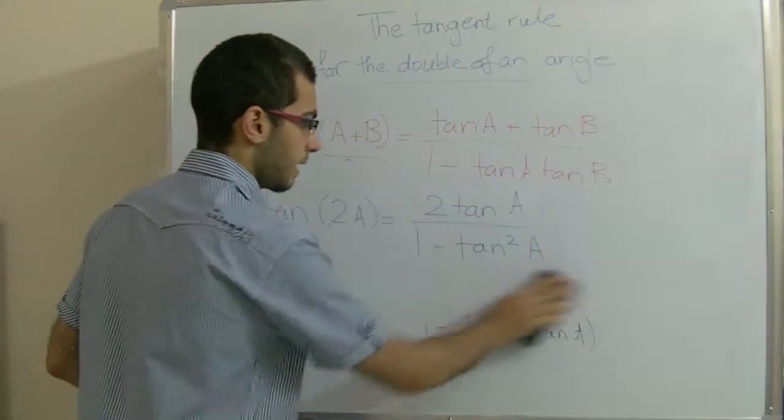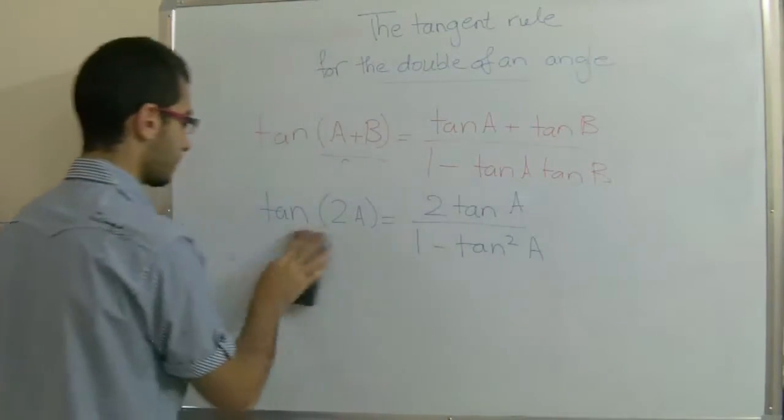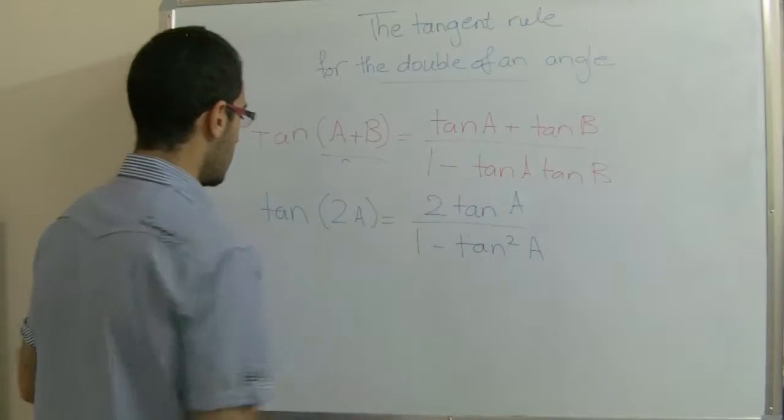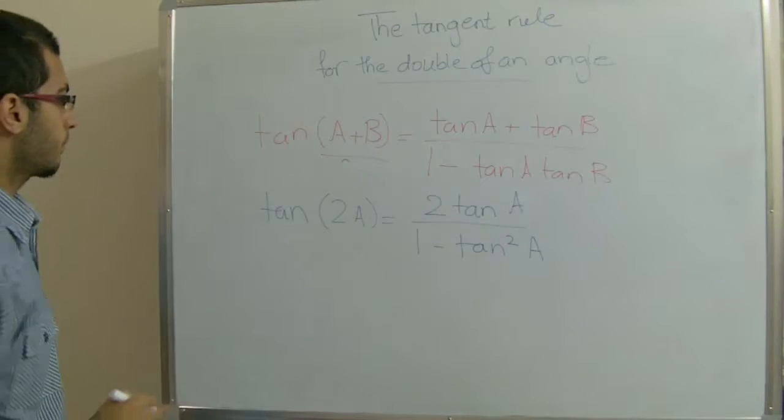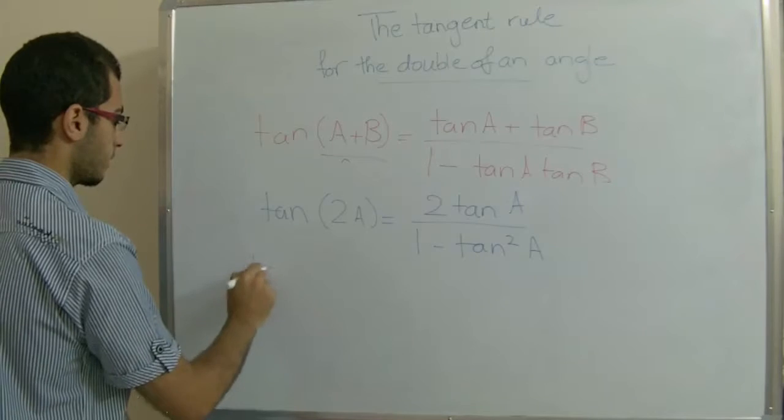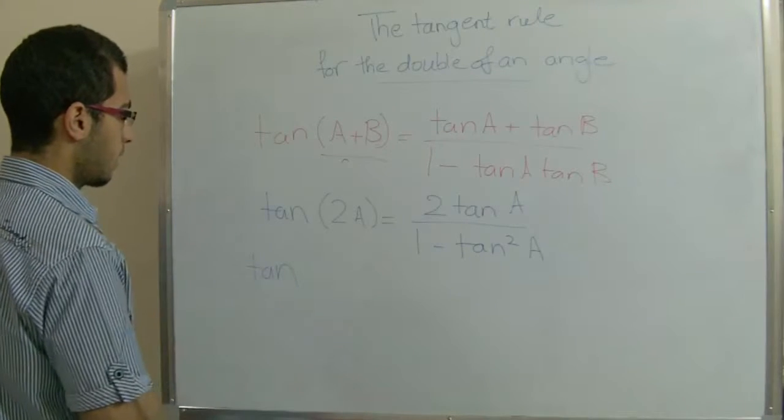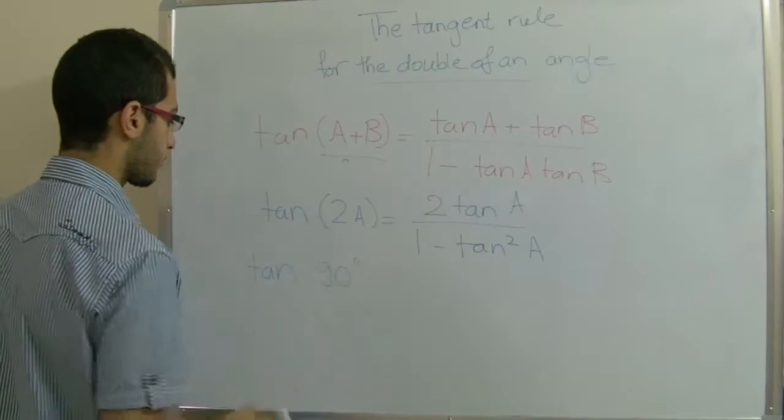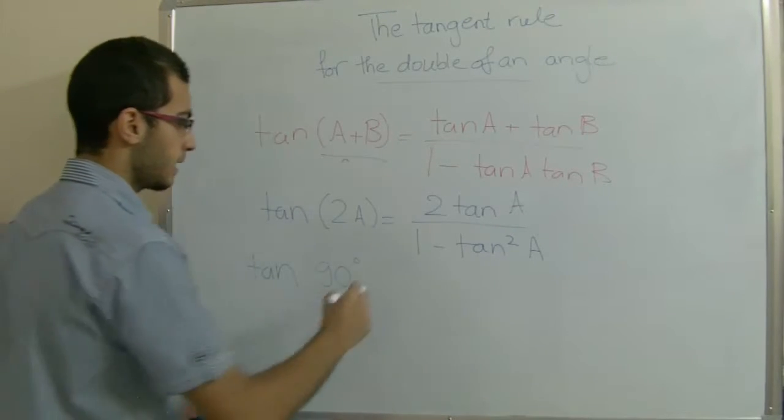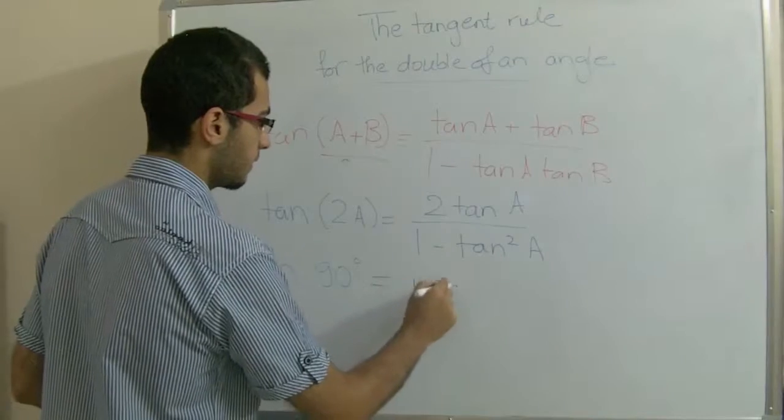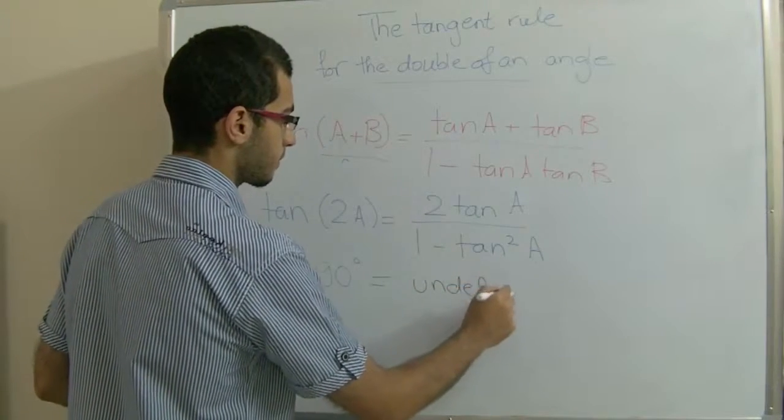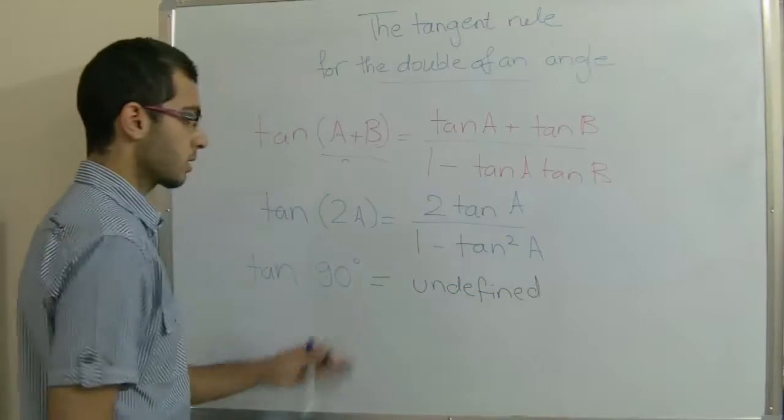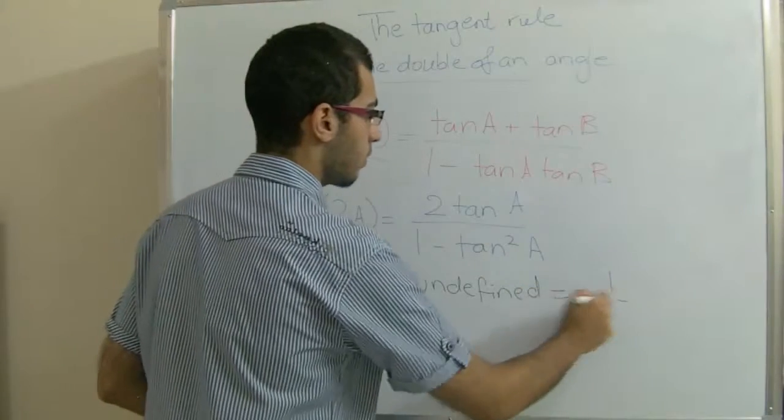So let's say that, for example, we want tan 90. And tan 90 is undefined, because it equals 1 over 0.